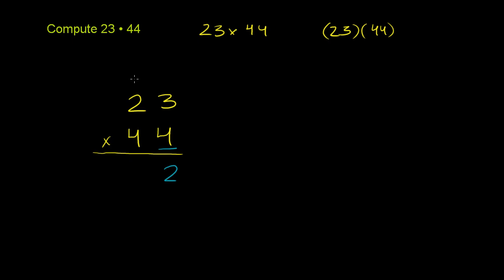So you put the 1 over here. Now you have 4 times 2 is 8, plus 1 is 9. So you can think about it as this 4 times 23 is 92. That's what we just solved for.